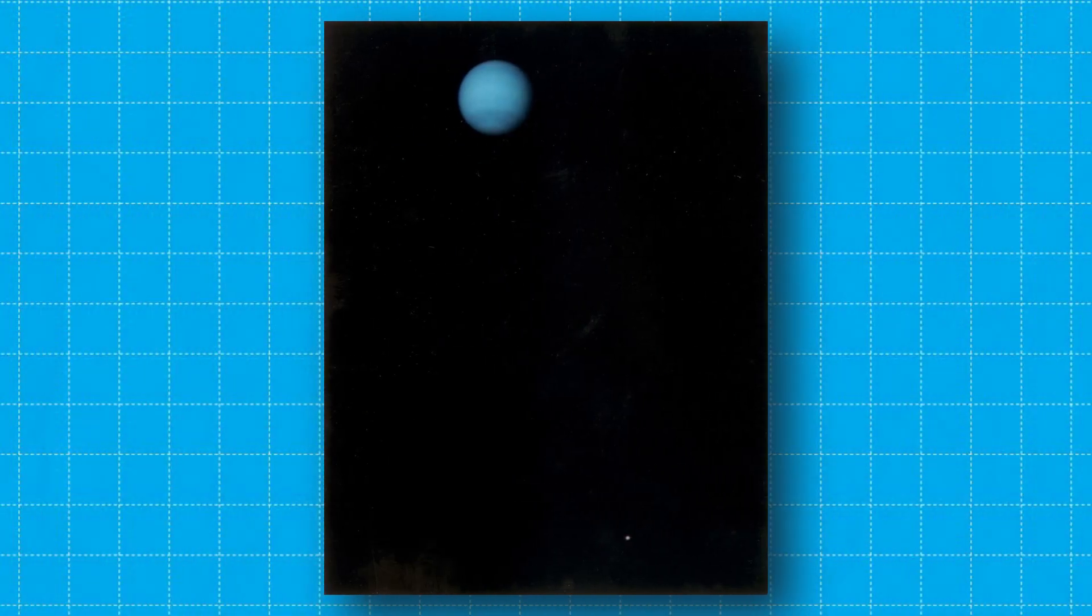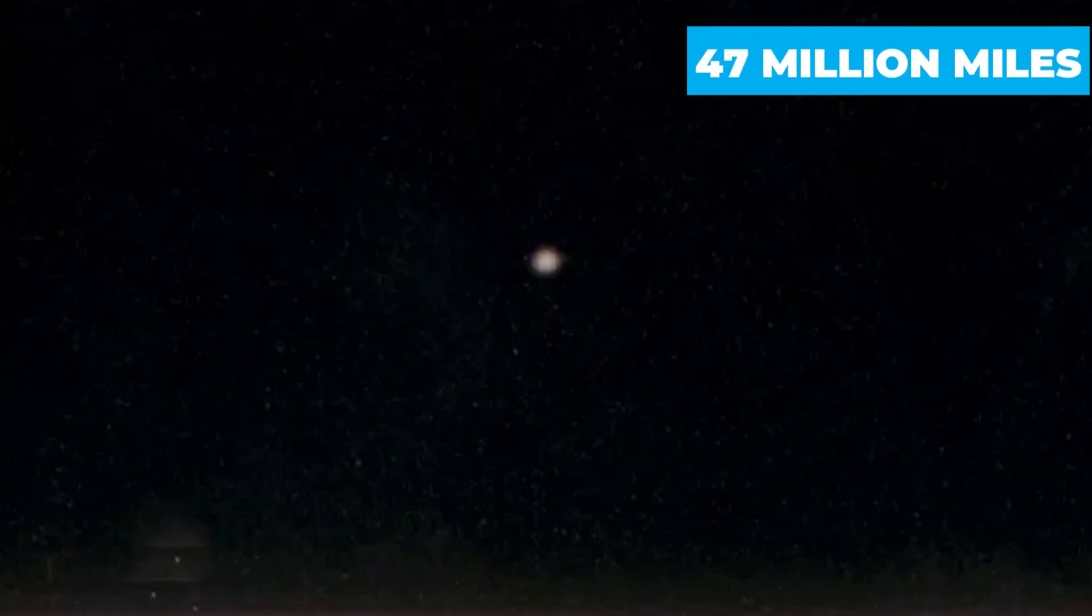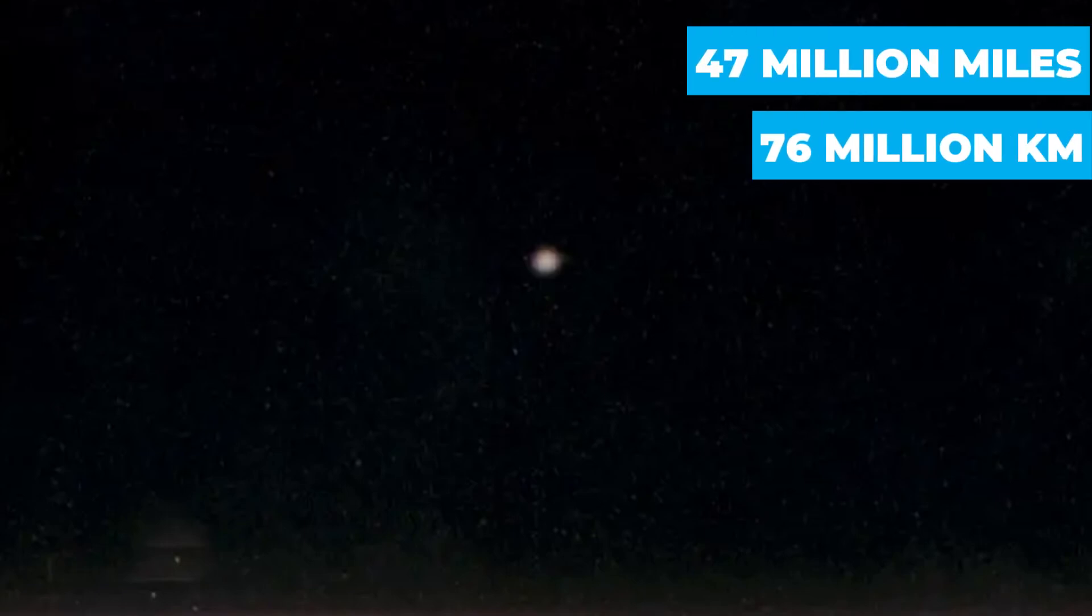The Voyager 2 spacecraft captured an image of Neptune and its largest moon, Triton, on July 3, 1989, from a distance of 47 million miles, or 76 million kilometers.